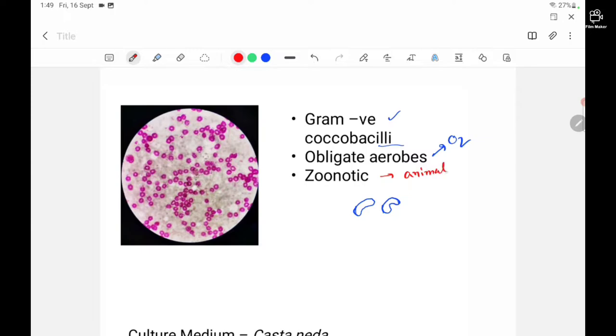Interestingly, the first subtype of Brucella which was isolated was B. melitensis. This B. melitensis was isolated by a person called David Bruce.